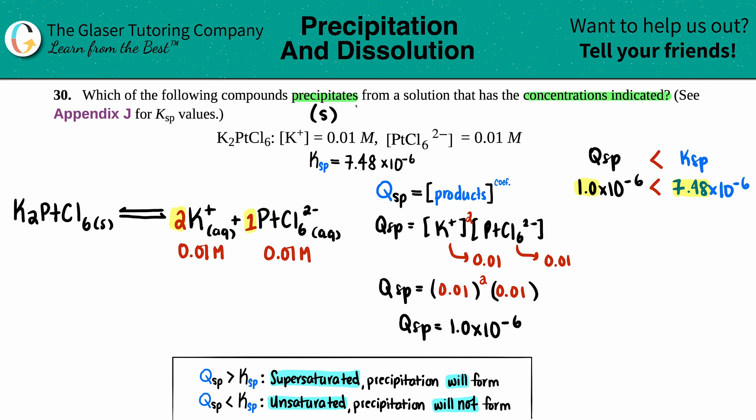In order to precipitate or have a solid remaining in solution, that Qsp always has to be greater than the Ksp. But if it didn't make it, if it's less than the Ksp, you're still unsaturated. You could add more concentration and maybe you still wouldn't see a precipitation. But at this point since it's not equal to or not greater than, no precipitate will form.